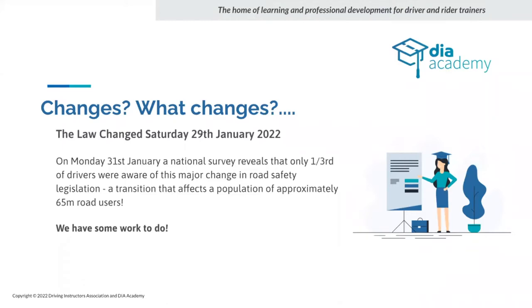On Monday the 31st, a survey was published showing that one third of all drivers were still unaware of the changes. We've got to remember there are nearly 65 million people living in the UK — 65 million potential pedestrians — and a lot of those have licenses. So we've got an awful lot of the population that don't understand the Highway Code rules, especially the hierarchy side.